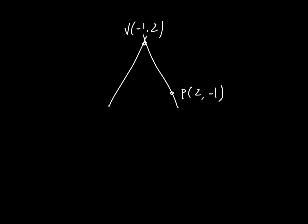So suppose you know what the vertex is and you're given some other point on your absolute value function. The standard form for the absolute value function is y equals a absolute value x minus h plus k.